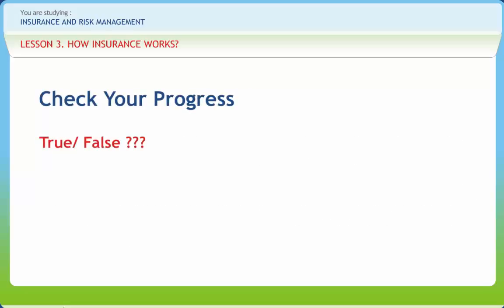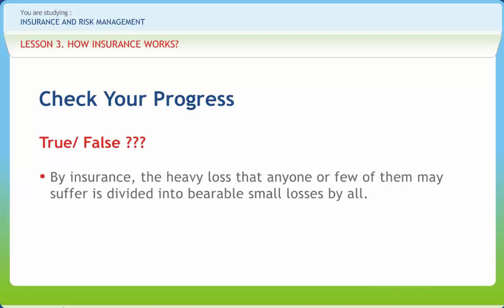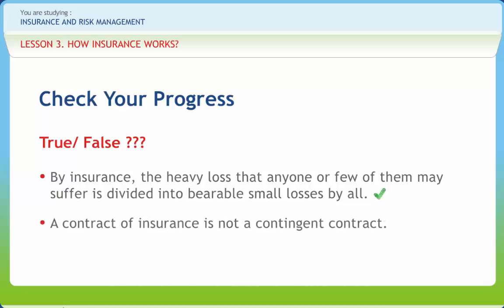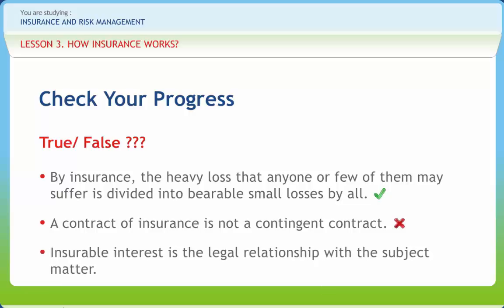Now let us check if we have understood the various concepts discussed in this lesson clearly. By insurance, the heavy loss that anyone or few of them may suffer is divided into bearable small losses by all — Right or wrong? Right. A contract of insurance is not a contingent contract — Right or wrong? Wrong. Insurable interest is the legal relationship with the subject matter — Right or wrong? Right.